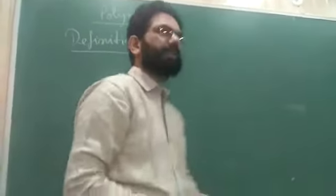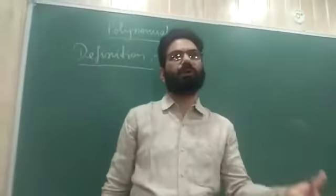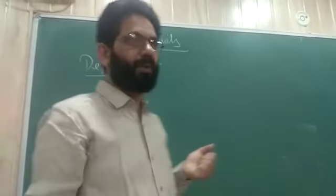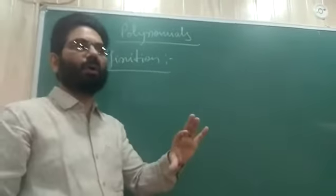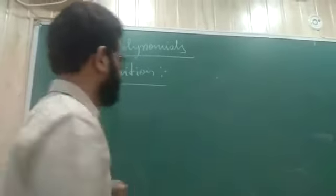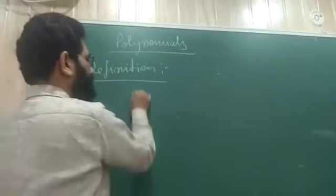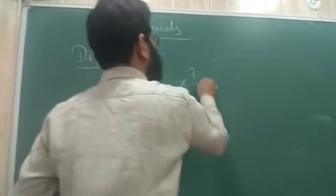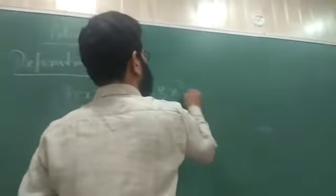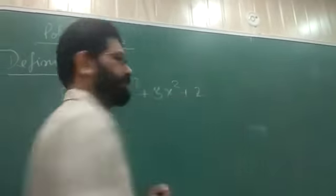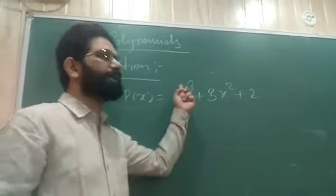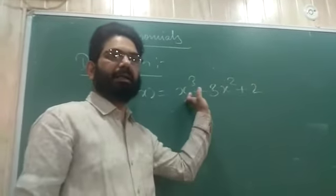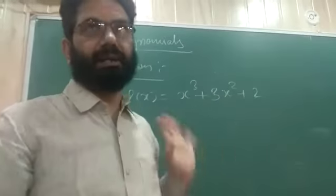There is a term called the degree of a polynomial. A polynomial is recognized by its degree. The highest power of the variable in a polynomial is known as its degree. For example, x³ + 3x² + 2 has degree 3.